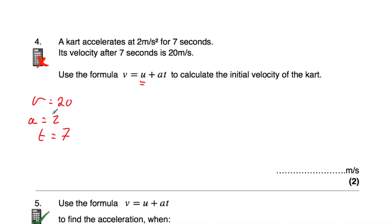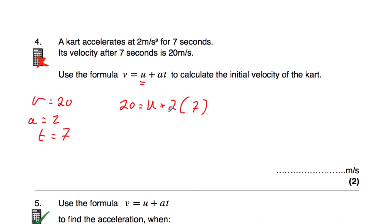So let's substitute these values into the formula: v, that's 20, is equal to u, plus a, which is 2, multiplied by t, which is 7. So 20 is equal to u plus 2 times 7. Some people would rearrange this formula to make u the subject — you can do that if you want. I tend to just substitute in the values and then rearrange. So we've got 20 equals u, and 2 times 7 is 14.